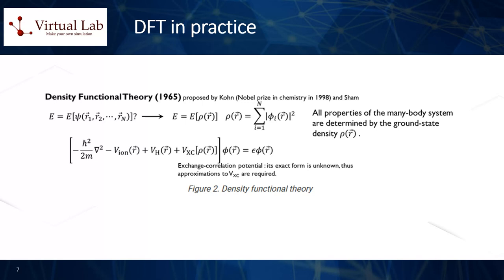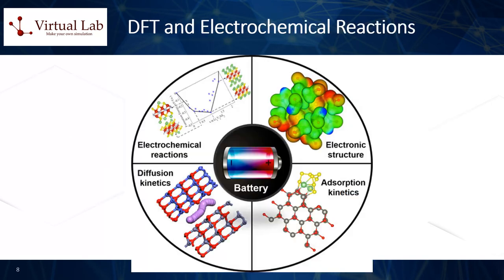Using this DFT method, the Gibbs free energy and transition state energy between the catalyst surface and the reactant, according to the relevant reaction path, can thus be computed for each electrochemical reaction under investigation. In this way, the reaction mechanism can be analyzed at the atomic and electronic level, in a way which would be hardly possible experimentally. Based on these considerations, DFT computational methods can therefore be effectively applied to the identification of electrochemical reaction mechanisms and the resulting design of new high-performance catalyst materials. Let us now explain in greater detail how DFT can help in the calculation of the reaction rate of electrochemical reactions.